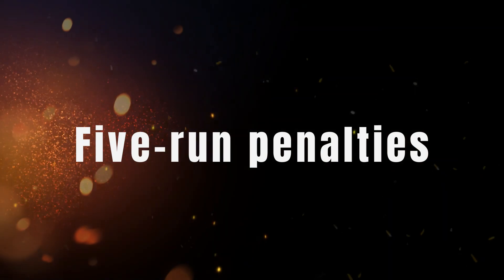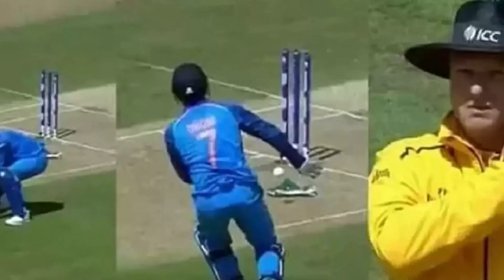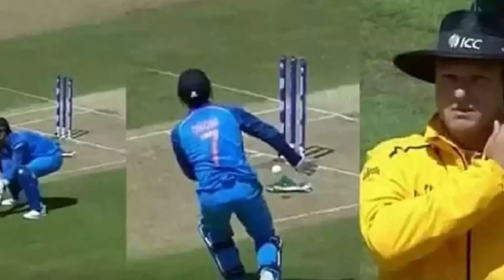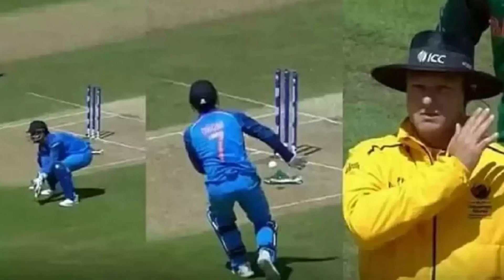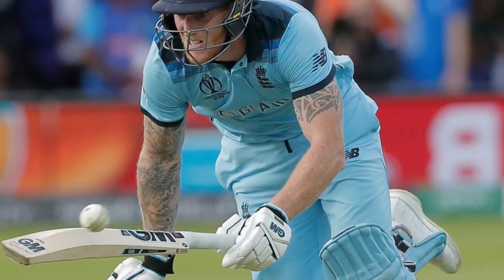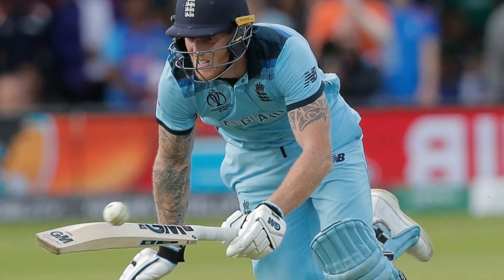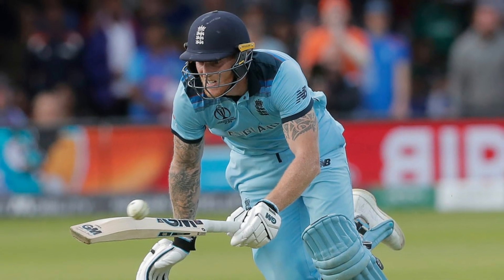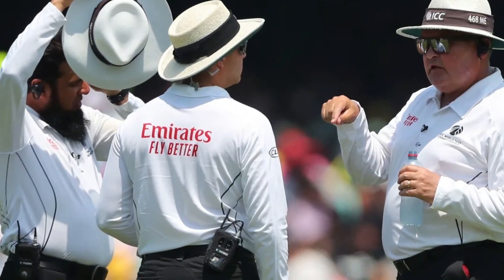5-Run Penalties. In T20 cricket, an umpire may award one of the team's five bonus runs if he feels the opposition is needlessly wasting time. This is designed to maintain the flow and pace of a T20 match.